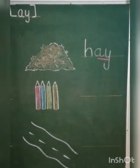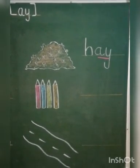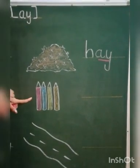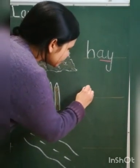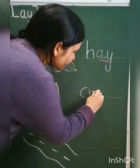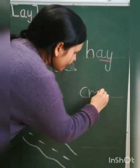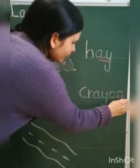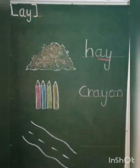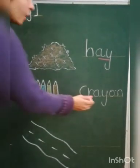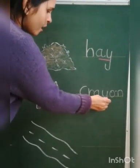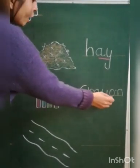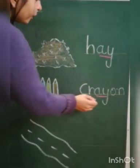And our next picture is crayon. Which picture is this? Crayon. And how do we write crayon? C, R, A, Y, O, N. Crayon. And kids, in this word, we can hear the A sound in the middle.